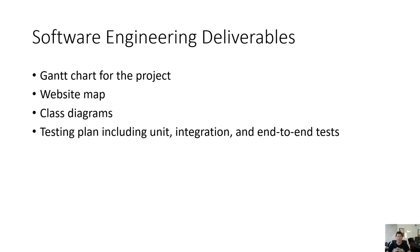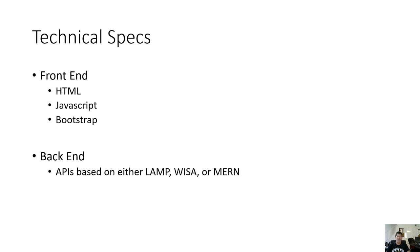The software engineering deliverables are going to be a good Gantt chart for the project so I can see what the progress is and who's doing what. A website map showing how the flow goes. Class diagrams — these will be pretty simple since the JavaScript apps are going to be fairly simple. And finally a testing plan including unit, integration, and end-to-end tests. The technical specs: the front end is going to be HTML, JavaScript, and Bootstrap, and at our first meeting we'll talk about this — possibly I could be talked into making it a React-based front end. The back end is going to be some sort of APIs based on LAMP, WAMP, or MAMP, and we'll negotiate that the first time we get together.